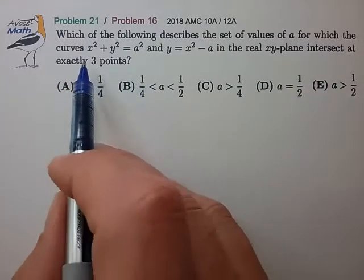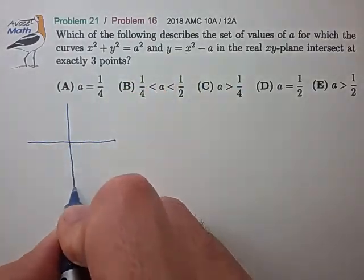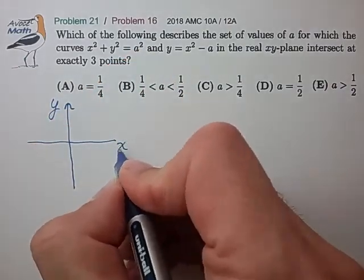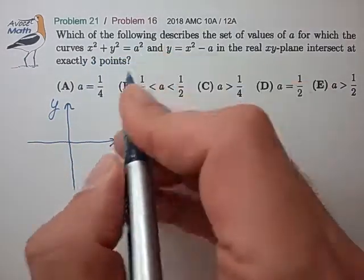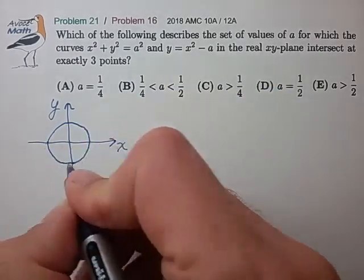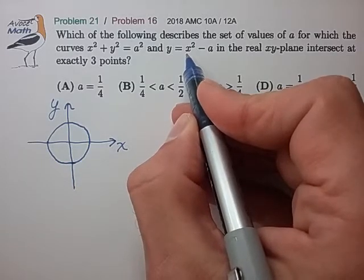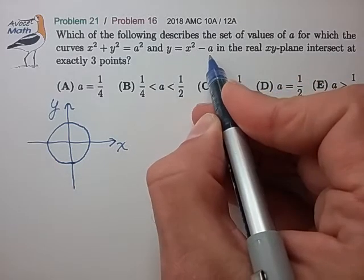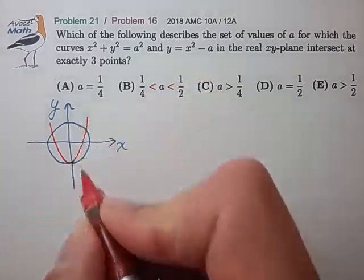Okay, let me see if I understand these two equations. Let me draw this out on the xy plane just to get an idea of what this all looks like. So this first curve looks like just a circle of radius a, and the second curve looks like a parabola that intercepts the y-axis at minus a. So that looks something like this.